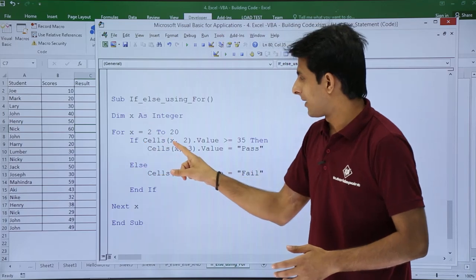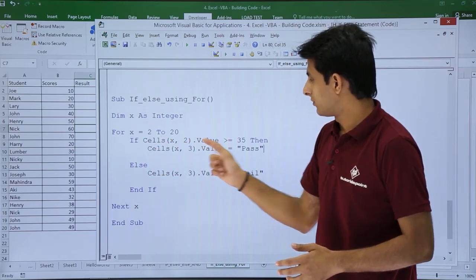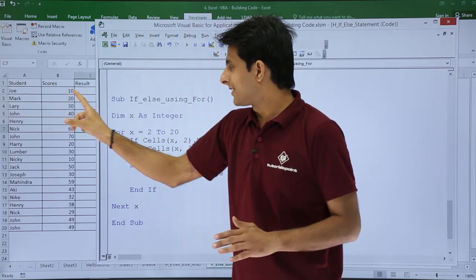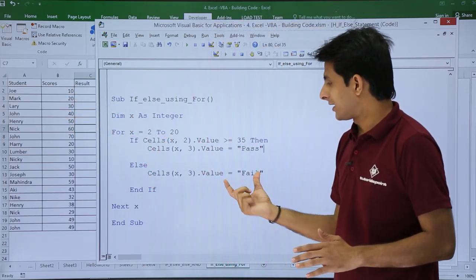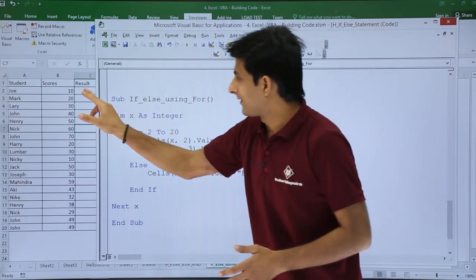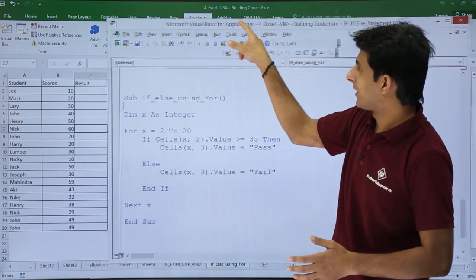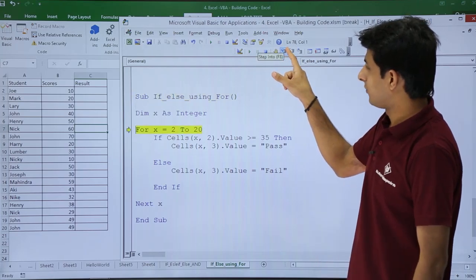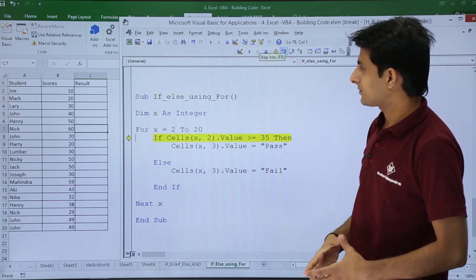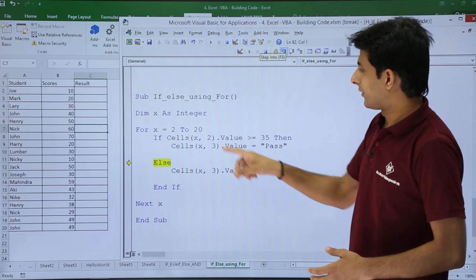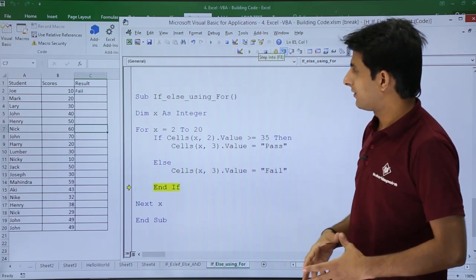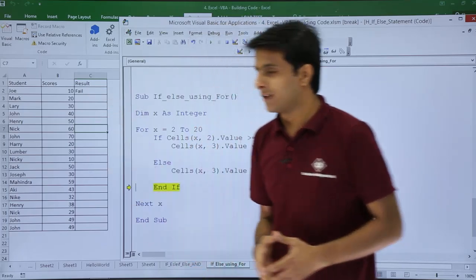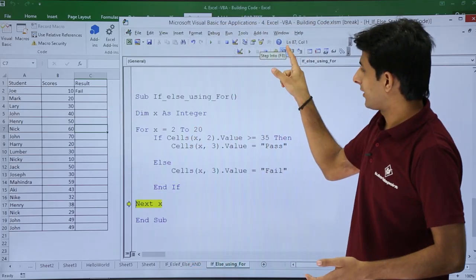First time the value of x will become 2. So 2 comma 2 greater than 35? This one, no it is less than 35, so the answer I'll get as fail. If I execute this step by step, I'll click on F8 step into. It went to the else condition. If I click on this, you see this one is less than 35, so I've got the answer is fail. Let us see the next one.